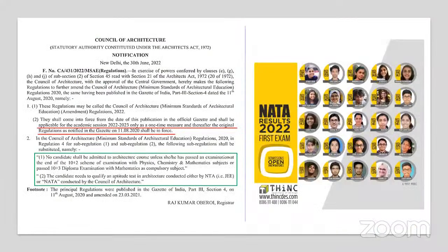Recently, the Council of Architecture has officially published a notification regarding the minimum standards of architectural education. As per the notification, they have clearly mentioned what the minimum standards required for architectural education are and what will be the eligibility criteria in order to get into an architecture or BArch course in India. We know the NATA examination is ongoing and the official notification and prospectus has already been published.